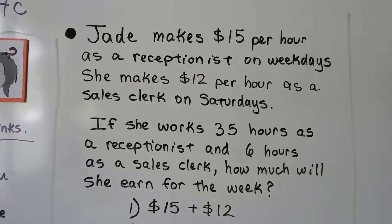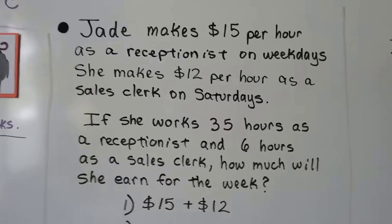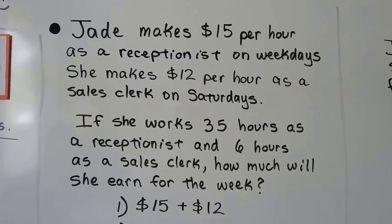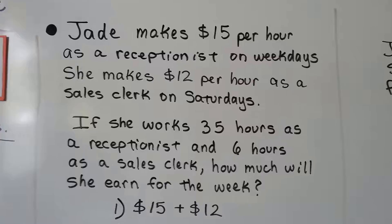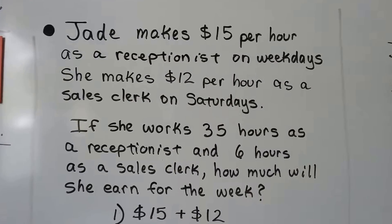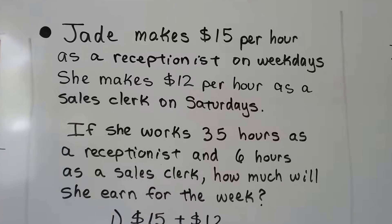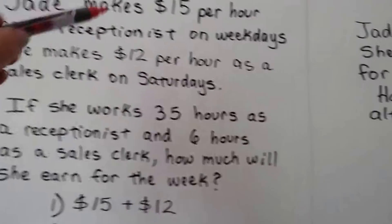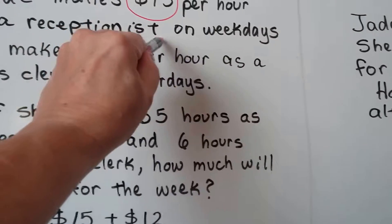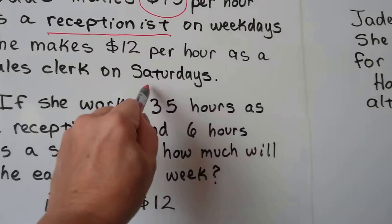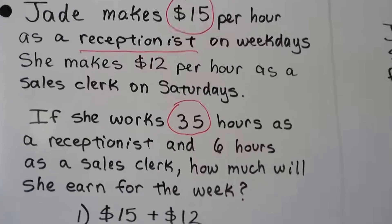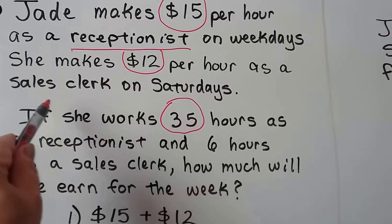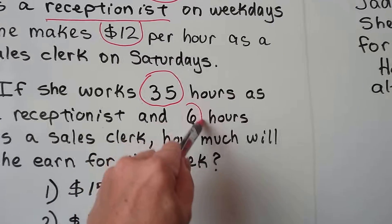So Jade makes $15 per hour as a receptionist on weekdays, and she makes $12 per hour as a sales clerk on Saturdays. If she works 35 hours as a receptionist and six hours as a sales clerk, how much will she earn for the week? So we actually have two separate problems here. It's a multi-step problem. The first thing we have to pay attention to is that she makes $15 per hour as a receptionist, and she did 35 hours at that. Then we see she makes $12 per hour as a sales clerk, and she did only six hours of that.